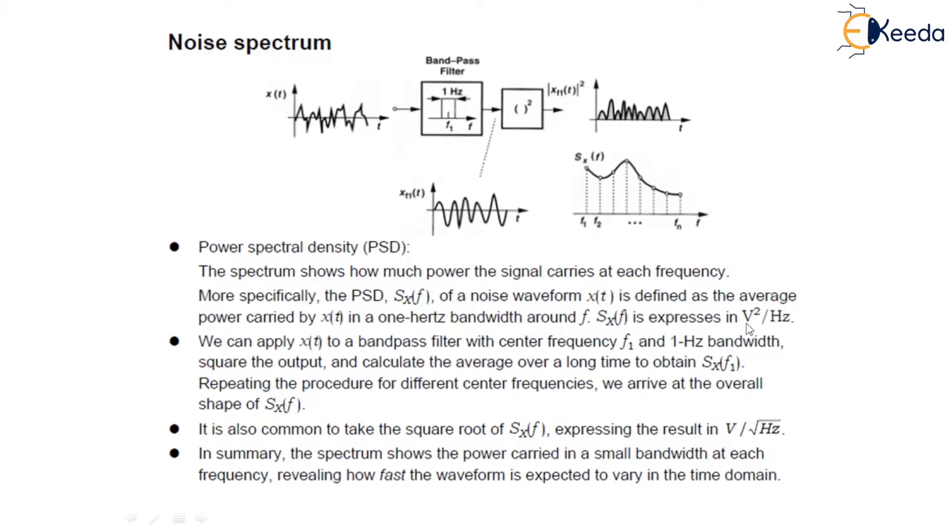It is usually expressed in volt square per hertz. What we are doing is we can apply x(t) to a bandpass filter with center frequency F1 and 1 Hz bandwidth, then square the output and calculate the average overall to obtain SX(F1). In repeating this procedure for different center frequencies, we arrive at the overall shape of SX(F).